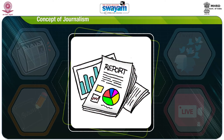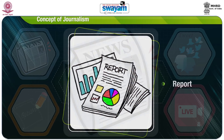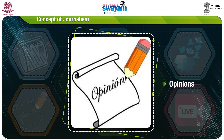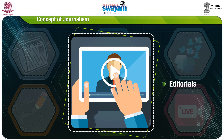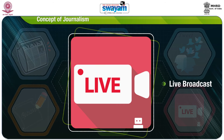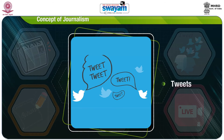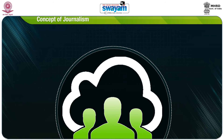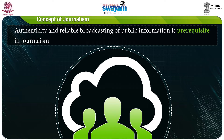Presently, there are multiple ways to present information or news, such as articles, reports, news items, opinions, editorials, pre-recorded or live broadcasts and even tweets. The content provided by news sources influences public perception. The authenticity and reliable broadcasting of public information is a prerequisite in journalism.